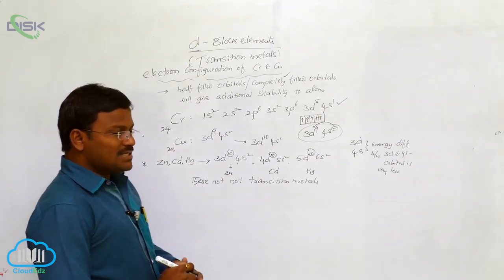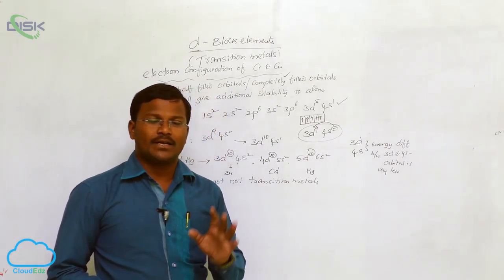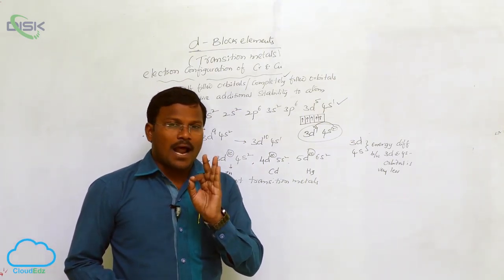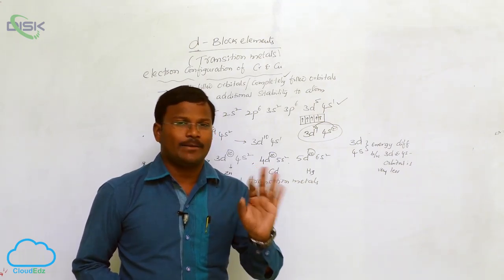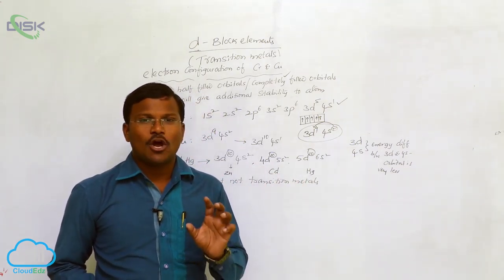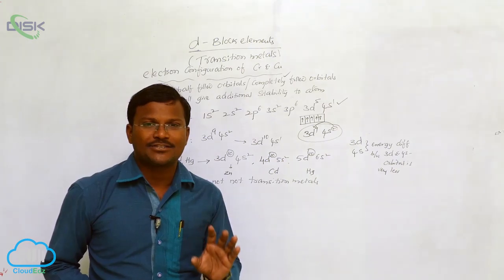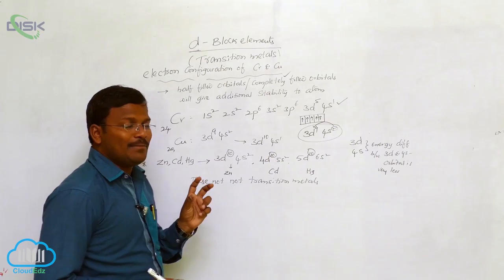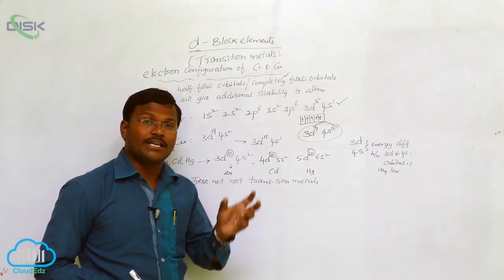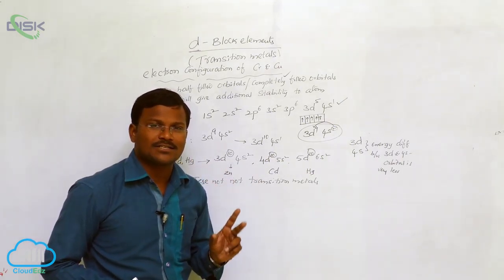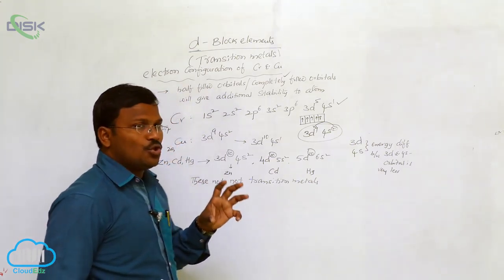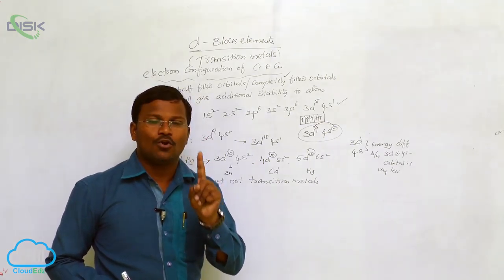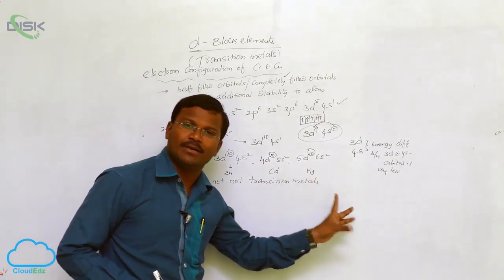So what is the definition we can provide for transition metals? The most important statement: transition metals are d-block elements, but all d-block elements are not transition metals. Only those elements which, in their atomic or ionic form, have a minimum of one unpaired electron are considered as transition elements.